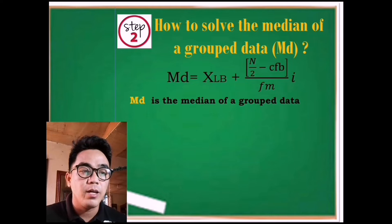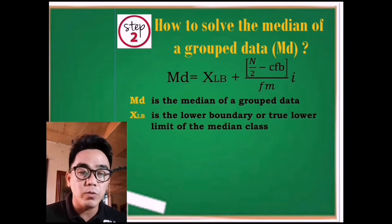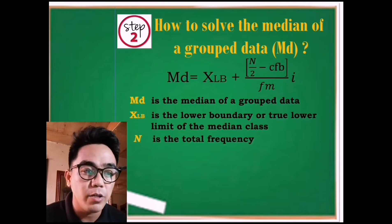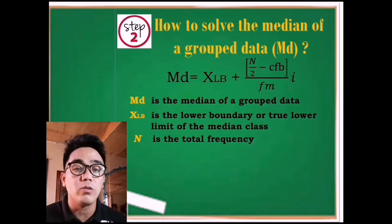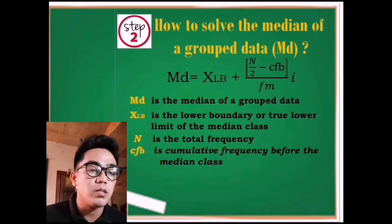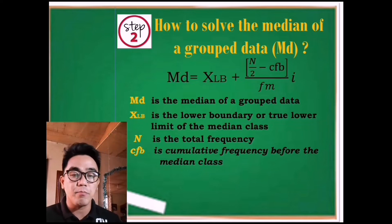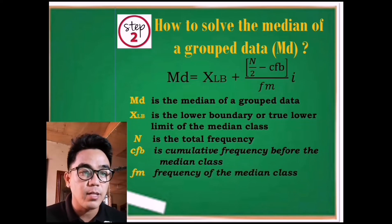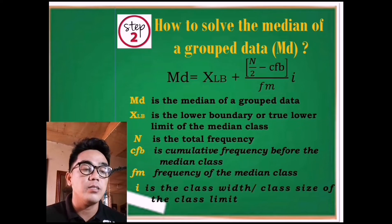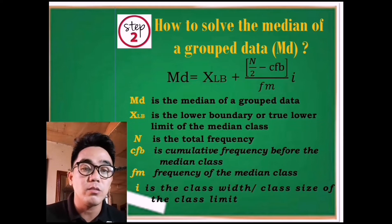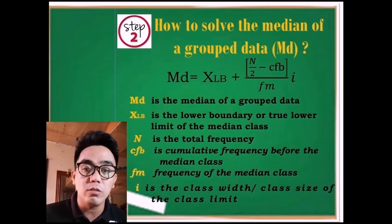XLB is the lower boundary or true lower limit of the median class. Capital N is the total frequency or total number of population of the given data. CFB is the cumulative frequency before the median class. FM is the frequency of the median class, and the letter i is the class width or class size. These are the essential terms in order to determine the median of grouped data.